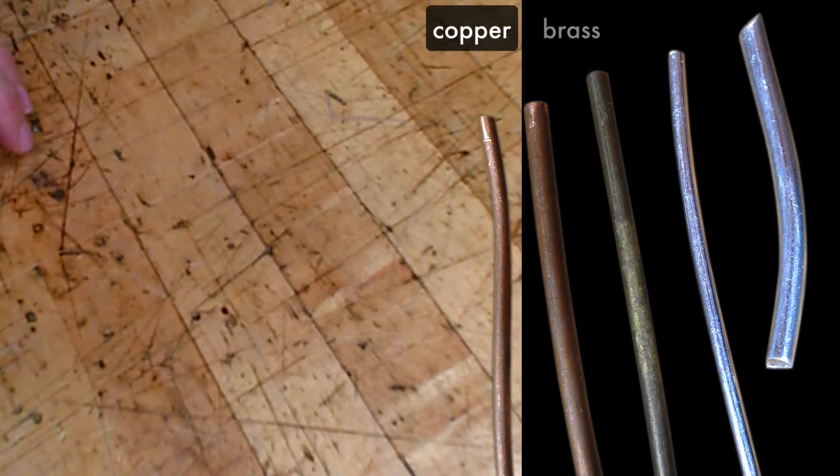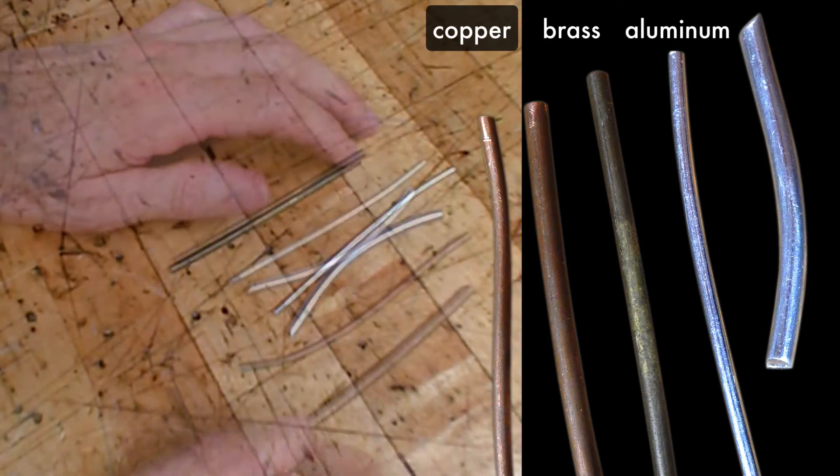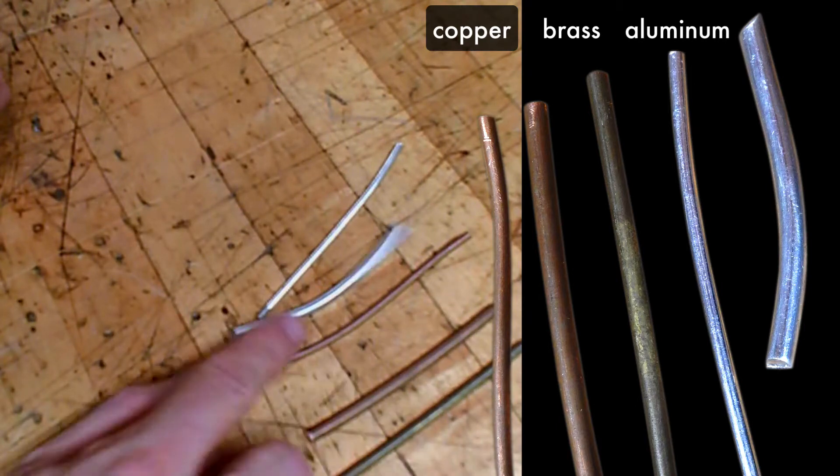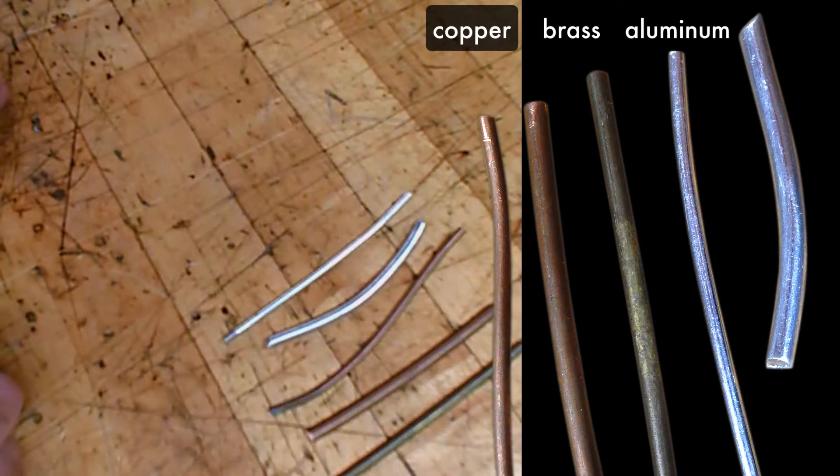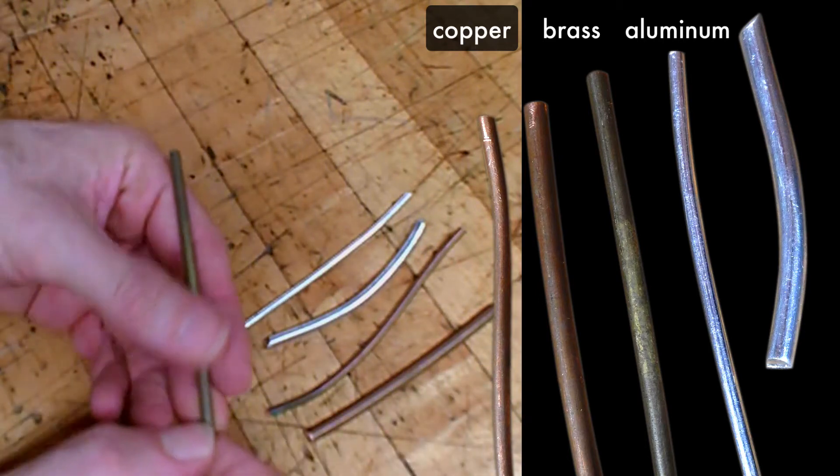So you can buy rivets, but you can also make your own just out of wire. It's really good to have an assortment of wires lying around if you're going to do a lot of riveting. So this is brass wire. This is copper wire. This is aluminum wire. They're all different sizes. They fit in different size holes, and I can cut it to any length I want.